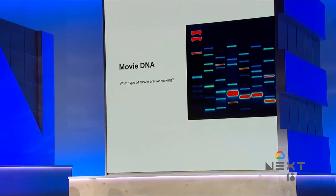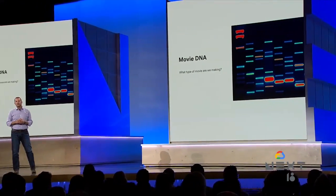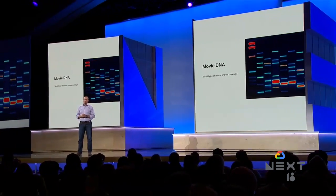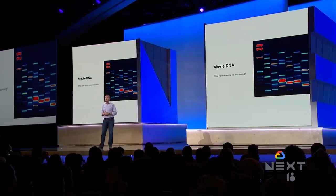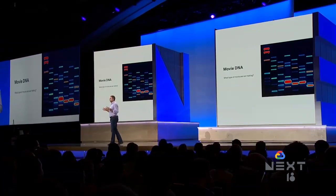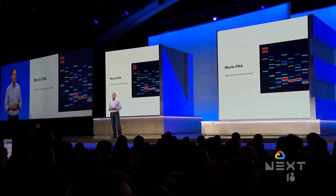Today I'm going to tell you about two of the tools that we've built at Fox. The first one is called Merlin. Merlin answers the question of what type of movie are we trying to make. Merlin looks at a bunch of data — it looks at the trailer of the movie through computer vision, it looks at the plot of the movie through NLP, and then it outputs a report that describes the likely DNA of the movie based on the data.